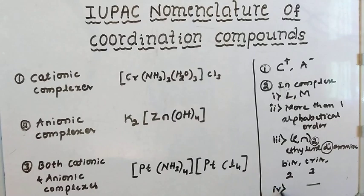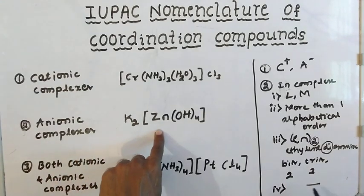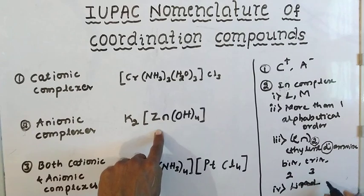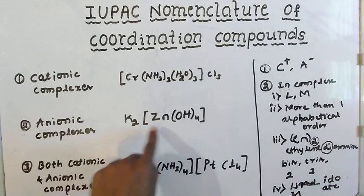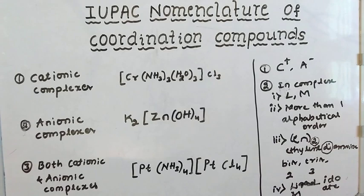This is the fourth rule and it applies only to anionic complexes. In anionic complexes, the ligand name should end with -ido, and the metal name should end with -ate.